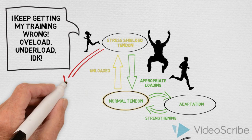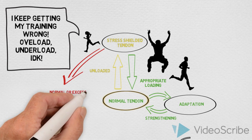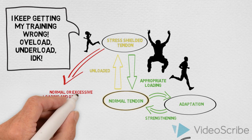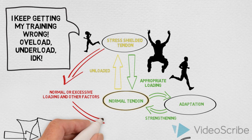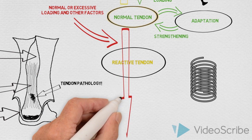The stress shielded tendon under even normal or excessive load, plus or minus other factors such as bone spurs, diabetes, statin use, etc., can become reactive. In the same way, a normal tendon when subjected to excessive load can become reactive.